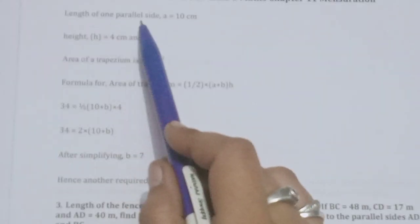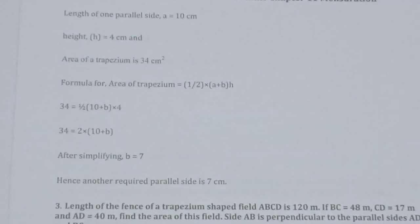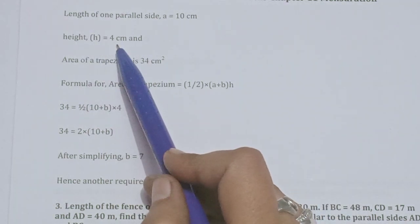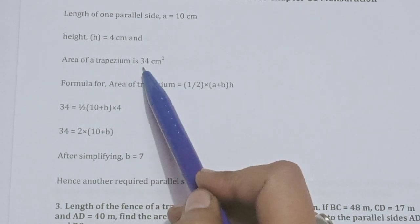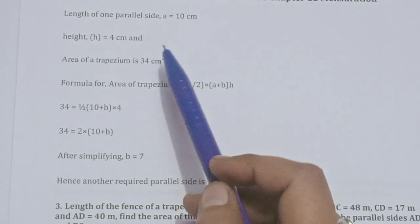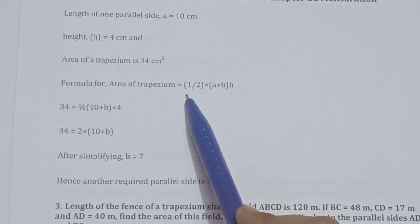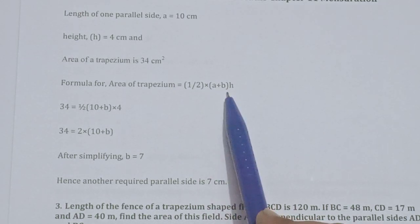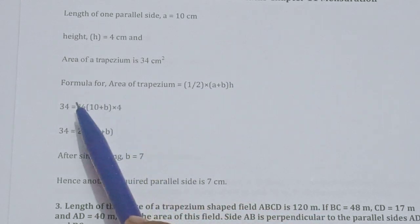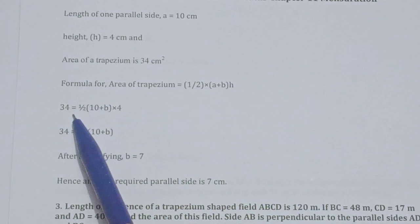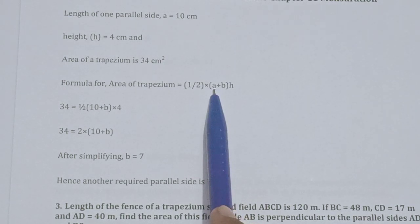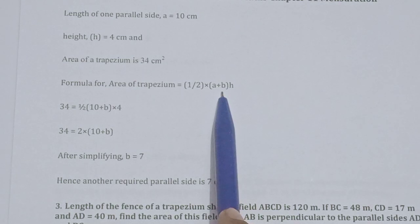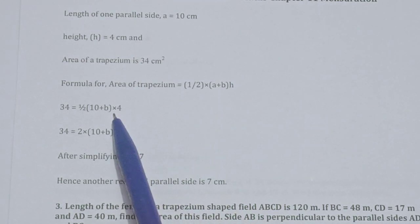The length of one parallel side A is 10 cm, height is 4 cm, and area of trapezium is 34 cm square. Area of trapezium equals half into (A plus B) into H — that is, half into the sum of its parallel sides into the perpendicular distance between them.